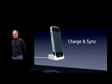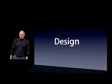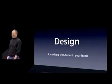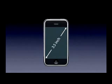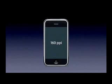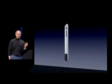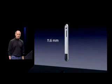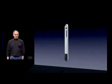The third thing is design — we've designed something wonderful for your hand. It has a 3.5-inch screen, really big, and it's the highest resolution screen we've ever shipped: 160 pixels per inch. It's gorgeous. On the front there's only one button — we call it the home button; it takes you home from wherever you are. On the side, it's really thin: 11.6 millimeters — thinner than the Motorola Q, thinner than the BlackJack, thinner than all of them.